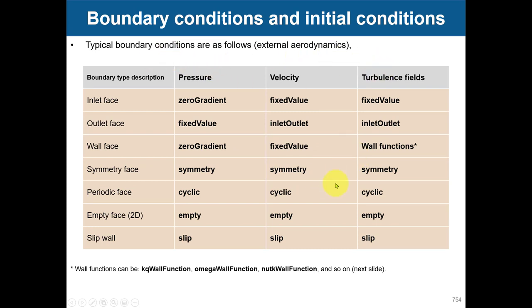Typical boundary conditions are as follows — here are some combinations for external aerodynamics that may also work with internal flows. At the inlet face: pressure uses zero gradient; velocity uses fixed value; and turbulence values are also fixed. At the outlet: turbulence fields and velocity use inletOutlet; and always fix the pressure value. At walls: pressure is zero gradient; velocity is fixed at (0 0 0), or the wall velocity if it is moving; and turbulence quantities use wall functions. For symmetry, all files use symmetry. For cyclic — periodic boundary conditions. For empty for 2D. For slip, it is equivalent to symmetry but can be used for non-planar faces, set as a patch in boundary.